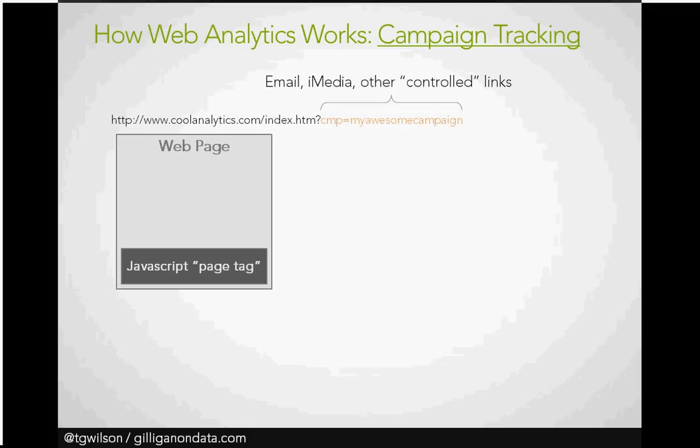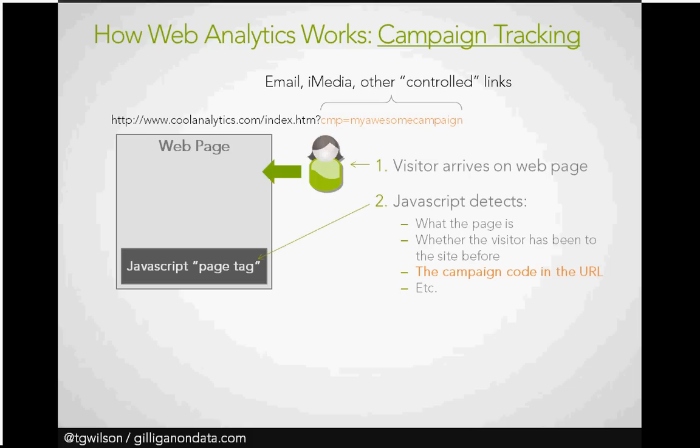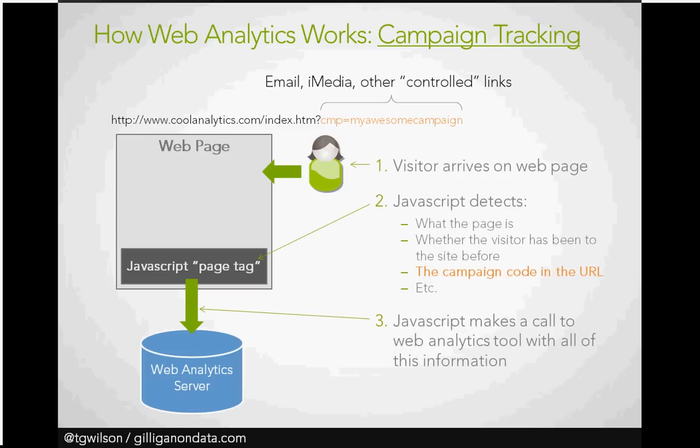Most websites are just going to ignore parameters they don't understand. But you've got that JavaScript running on the page. So when a visitor arrives, the JavaScript detects the same information, but it's smart enough to say: I recognize that CMP equals value — whatever the value is for that tool. This is telling me what campaign or specific activity drove this person to the site. So when I package all this information up, I'm going to include that as well and tell the web analytics server what campaign sent this visitor. Once again, glorious analysis ensues.